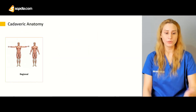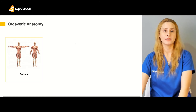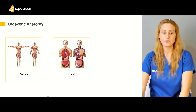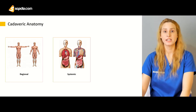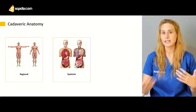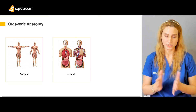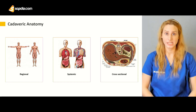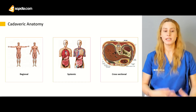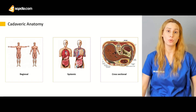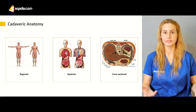Cadaveric anatomy involves study or dissection on a dead body. We can organize it into regional, systemic, and cross-sectional study. Regional is like studying the upper limb, thorax, abdomen, or lower limb — focusing on one region. Systemic anatomy is like studying the cardiovascular system, respiratory system, or GI system — organized by body system.